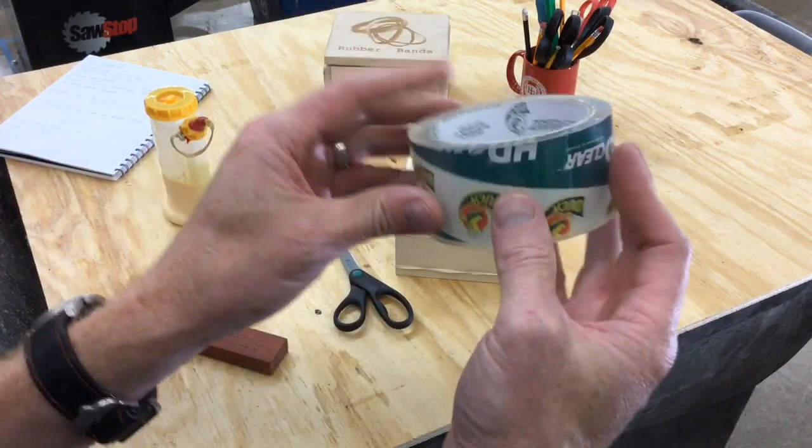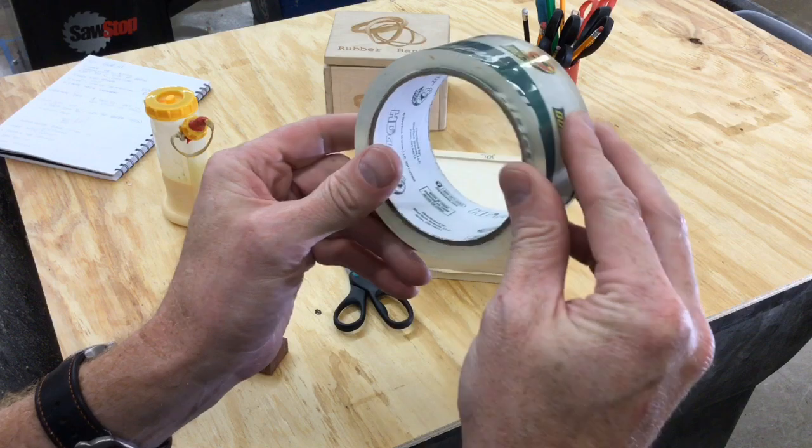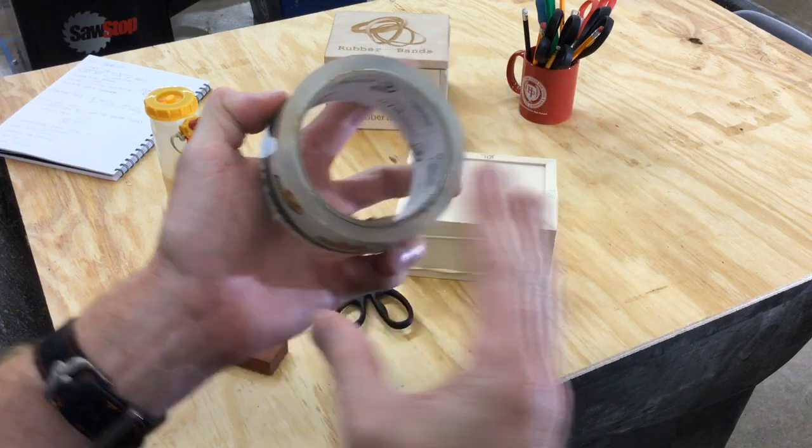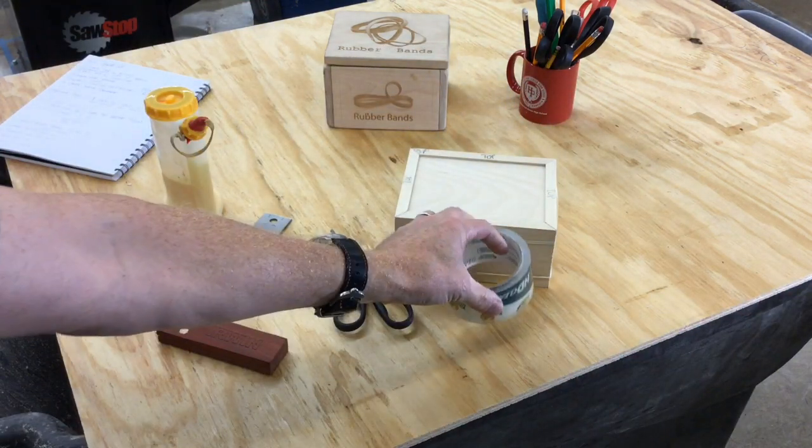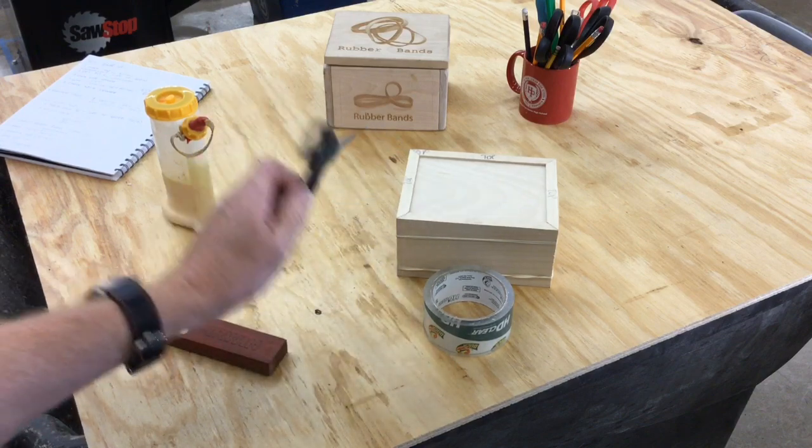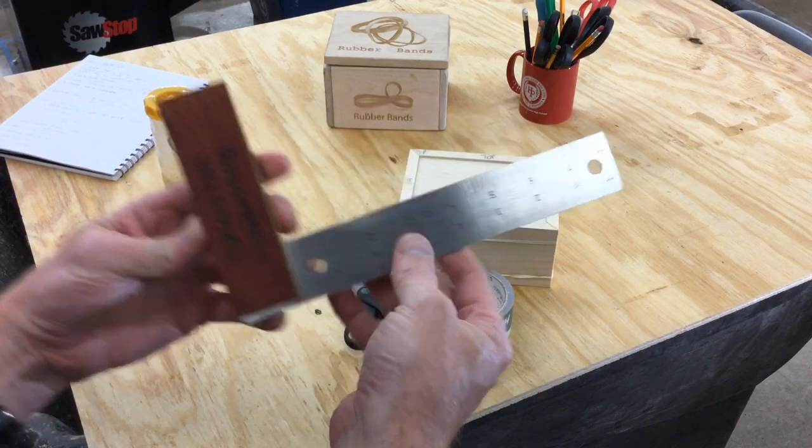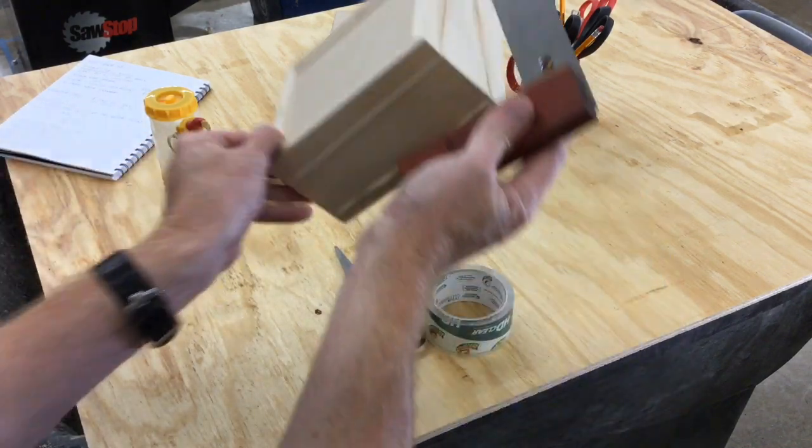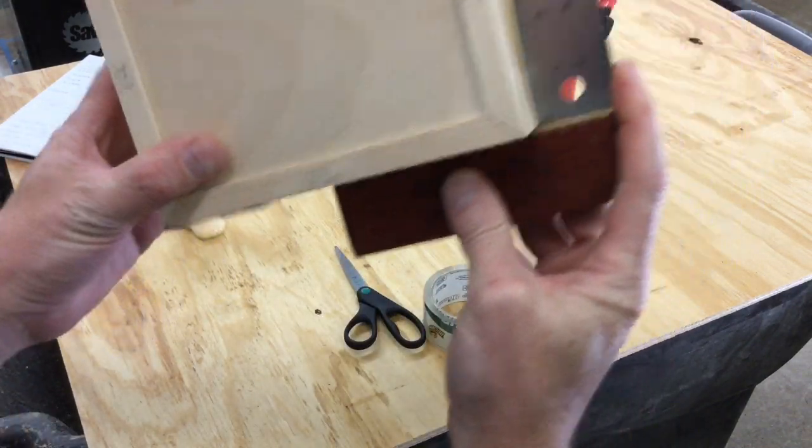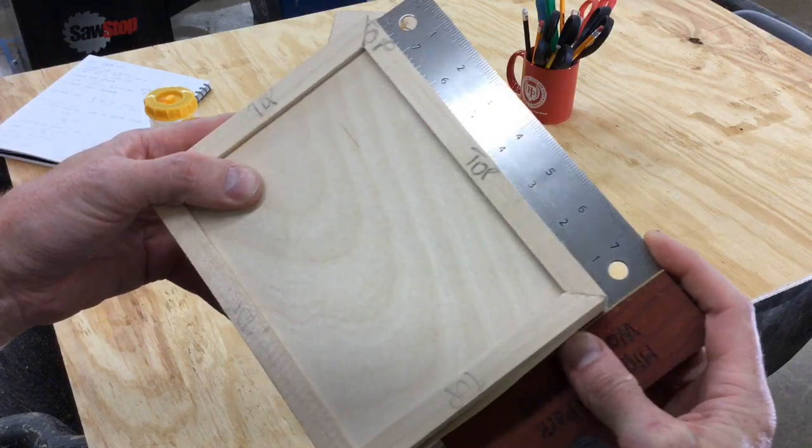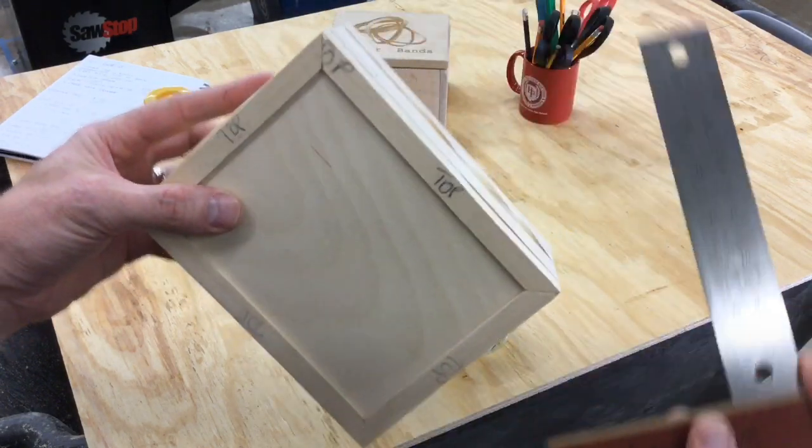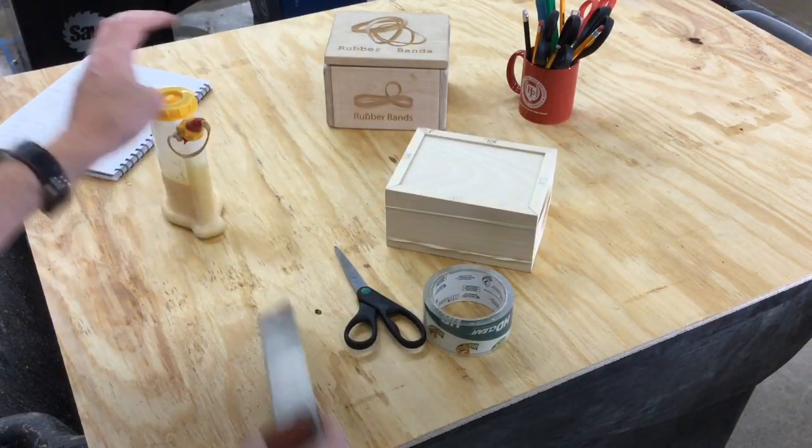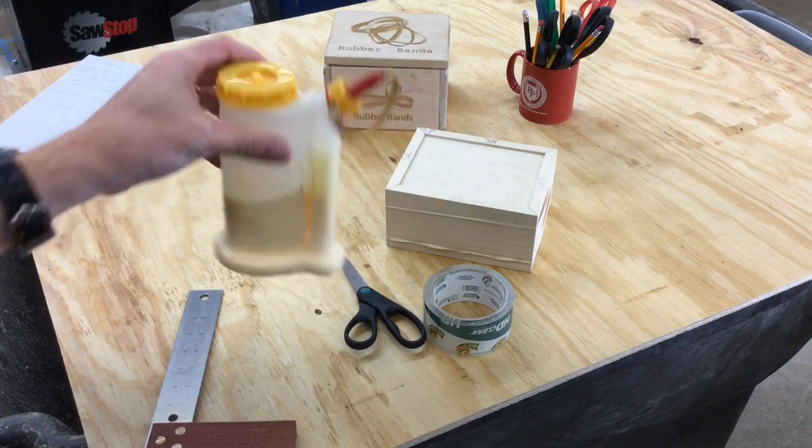I'm also going to need some of this clear packaging tape. We're going to use this to tape the box together. You'll need scissors to cut that tape. You're going to need one of these squares in order to check to make sure that the corners are square or at 90 degrees before the glue dries, and then you're going to need some glue.